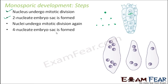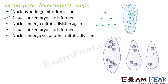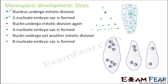Each of the four nuclei again undergoes mitotic division. So first it is a two-nucleate embryo sac, then a four-nucleate embryo sac, and finally an eight-nucleate embryo sac. So you started with a single nucleus of the megaspore and ended up with an eight-nucleate embryo sac, which is the final structure formed.